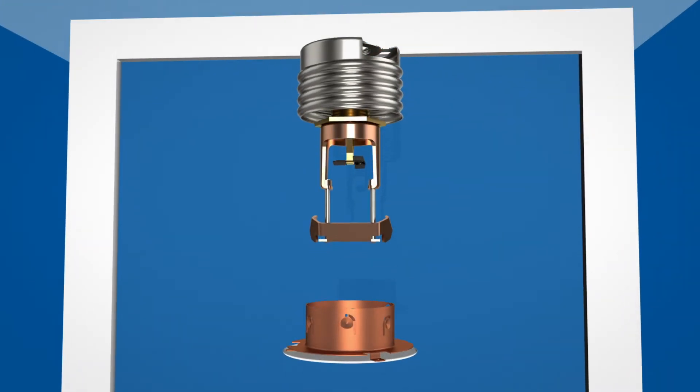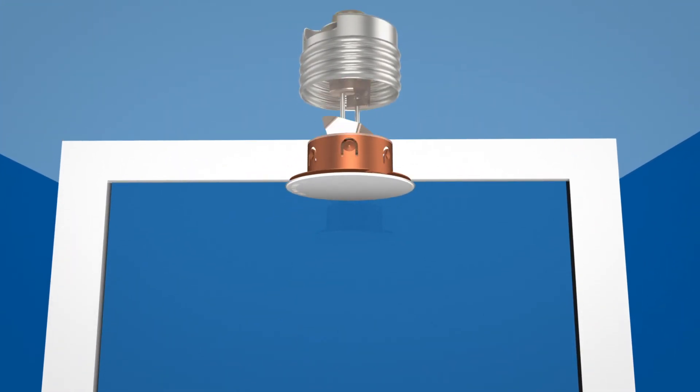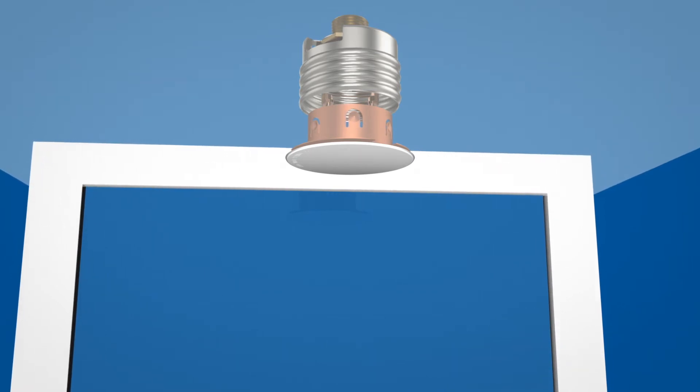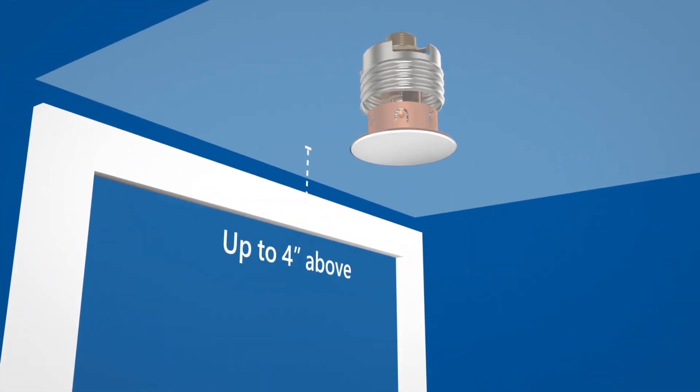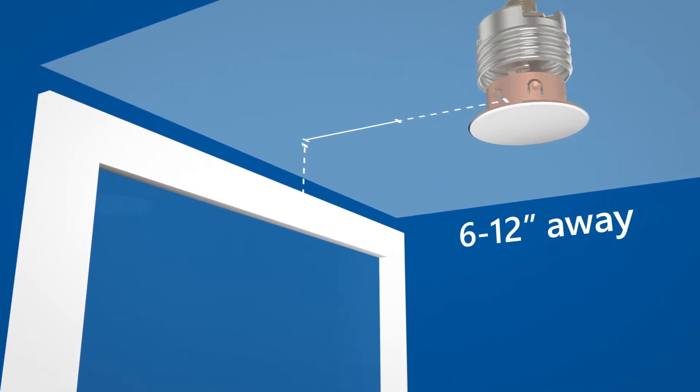Concealed window sprinklers are designed to be installed hidden within the ceiling and therefore are more aesthetically pleasing. They can be placed anywhere from flush to four inches above the top of the glass and six to twelve inches away from the glass.